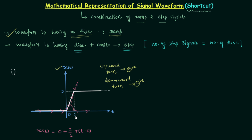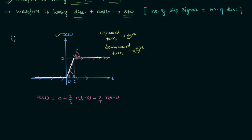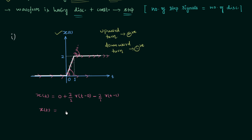When t is equal to 1, the signal flow turns downward, so we take the negative sign. The ramp signal is r(t − 1) because the signal turns at t equal to 1, and the magnitude of the slope remains 2 since the angle is the same. Simplifying, we get x(t) = 2r(t) − 2r(t − 1). This is the answer.